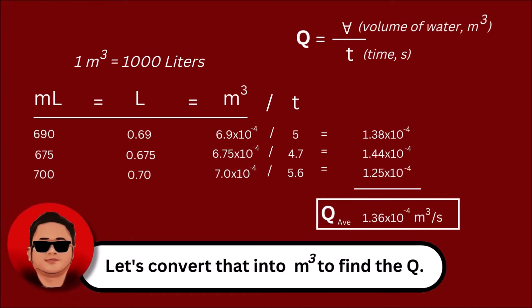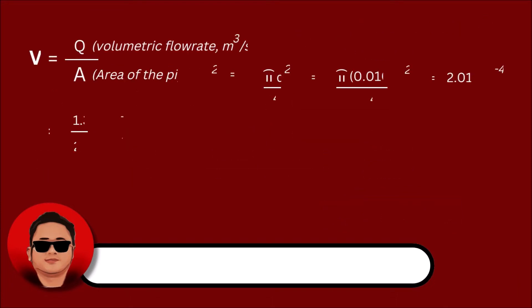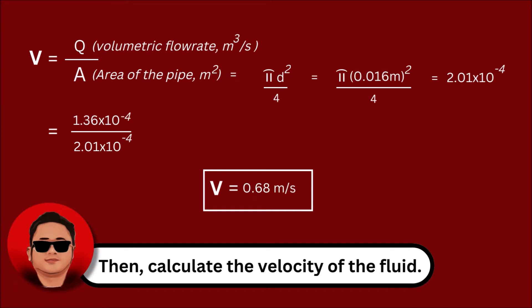Convert the values again into cubic meters then take the average. Then, calculate the velocity of the fluid.